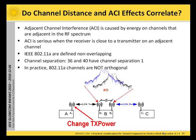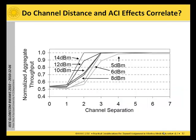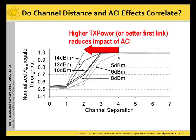In the experiments we did, we changed the transmission power at node A and changed the channel on link 2. By that we get different signal strengths on the first link and also different channel distances. In the picture here you can see the normalized aggregate throughput for our setup when we send data from node A to node C, for different channel separations and different transmission powers on node A. As you can see, if we increase the transmission power on the first link we get lower impact of ACI.